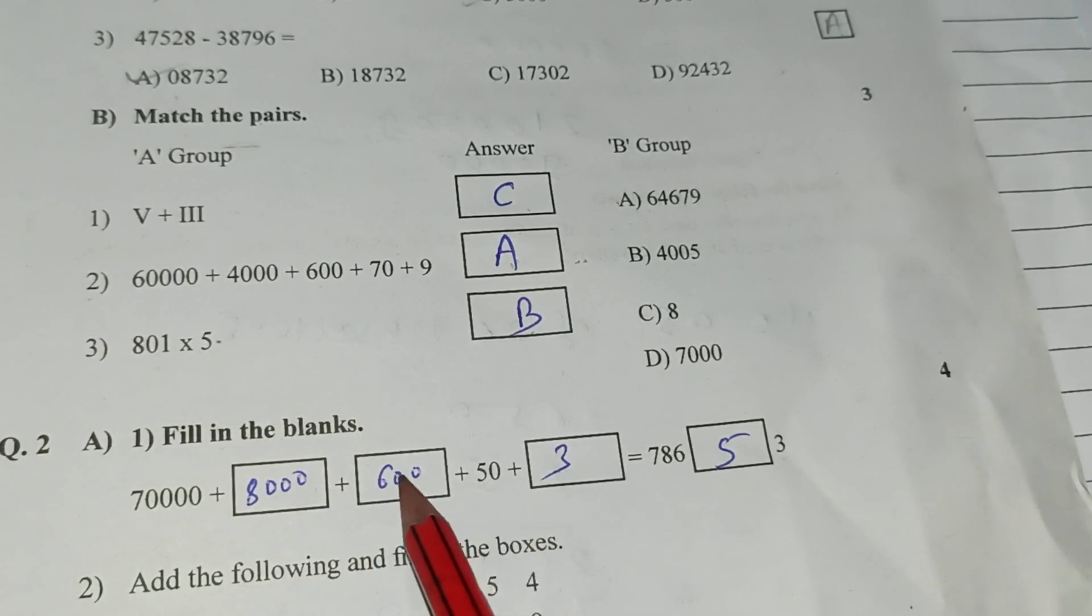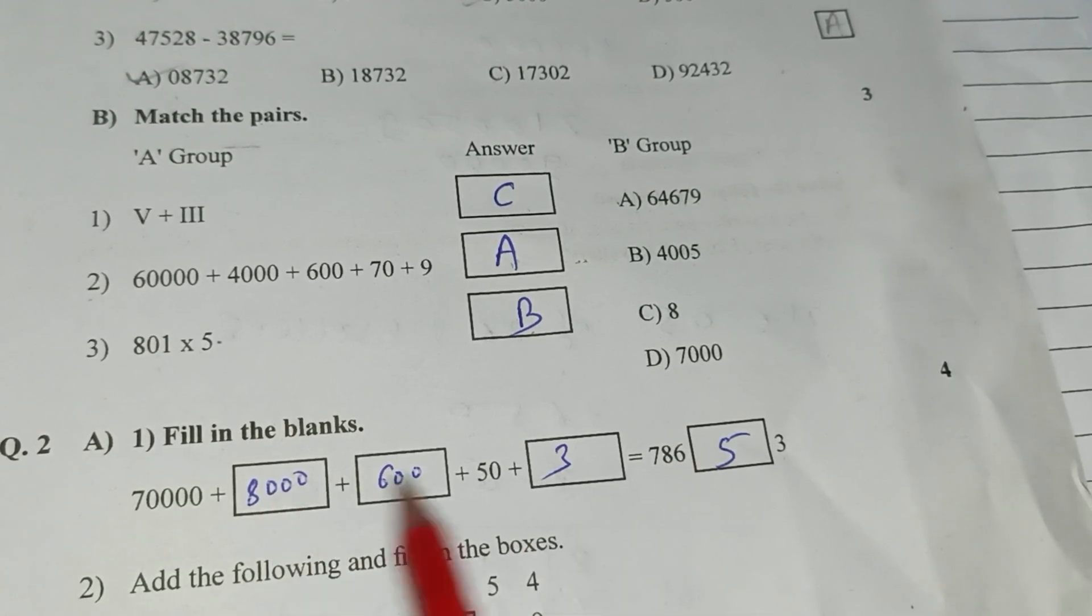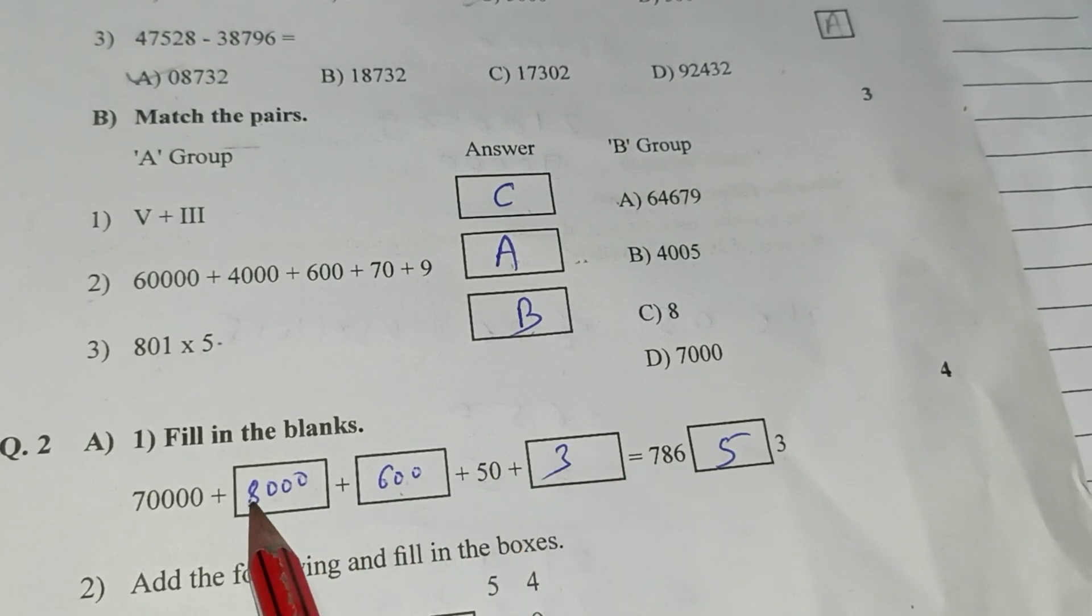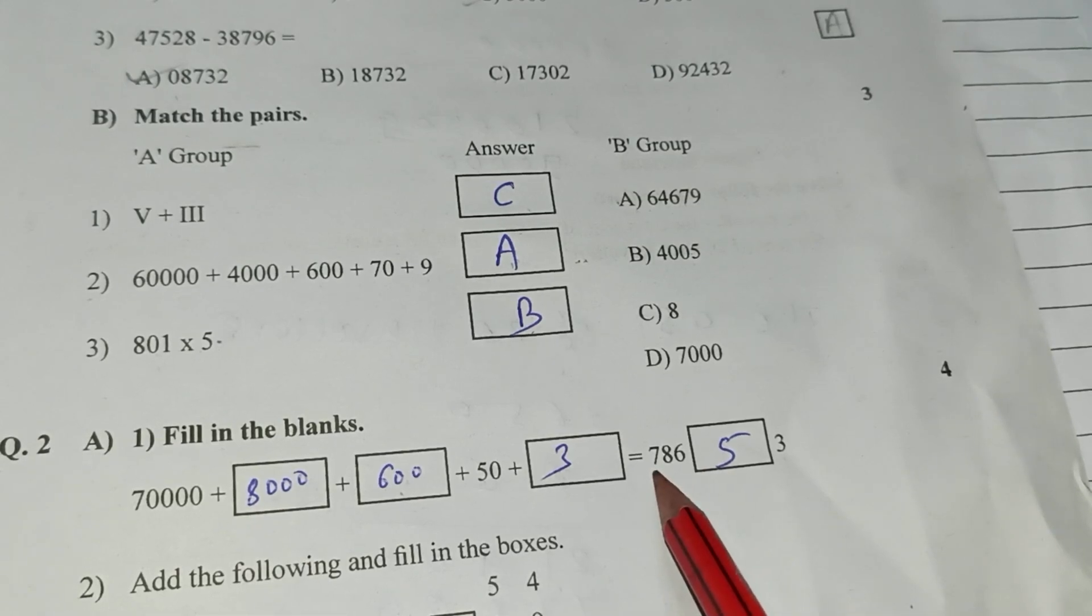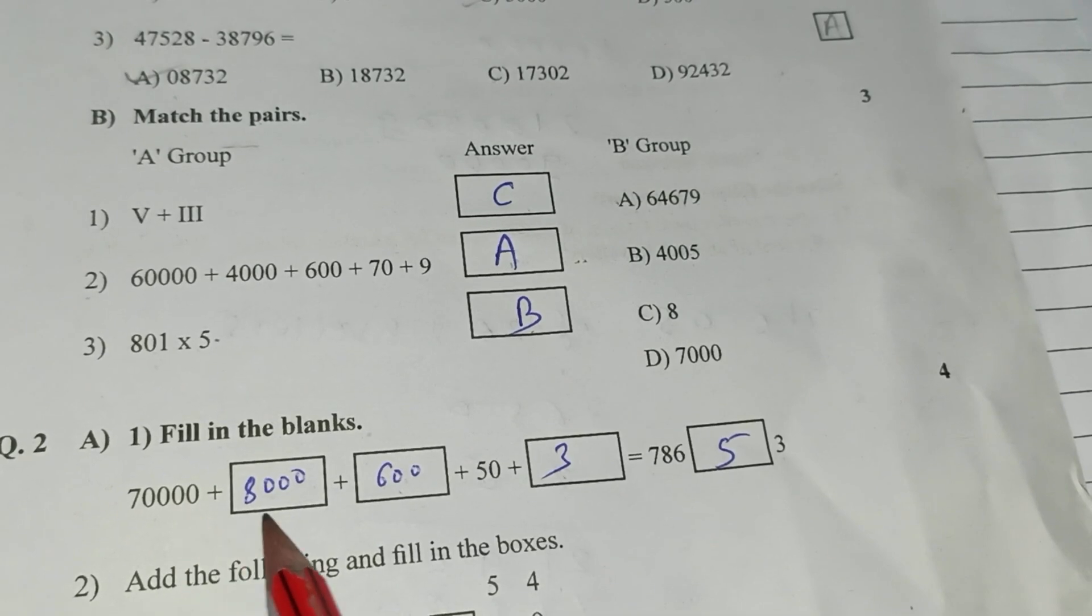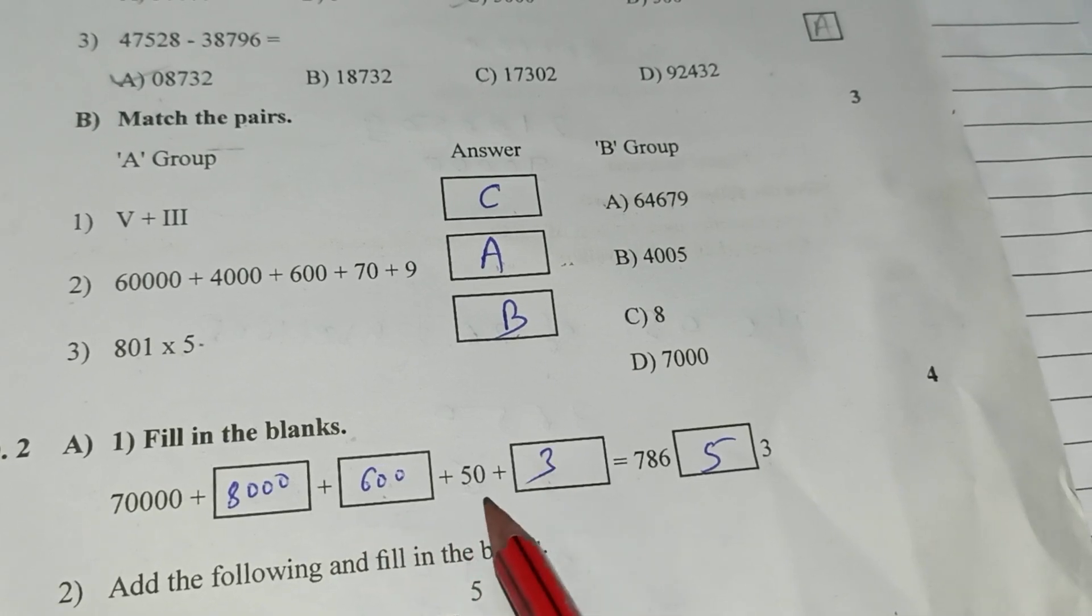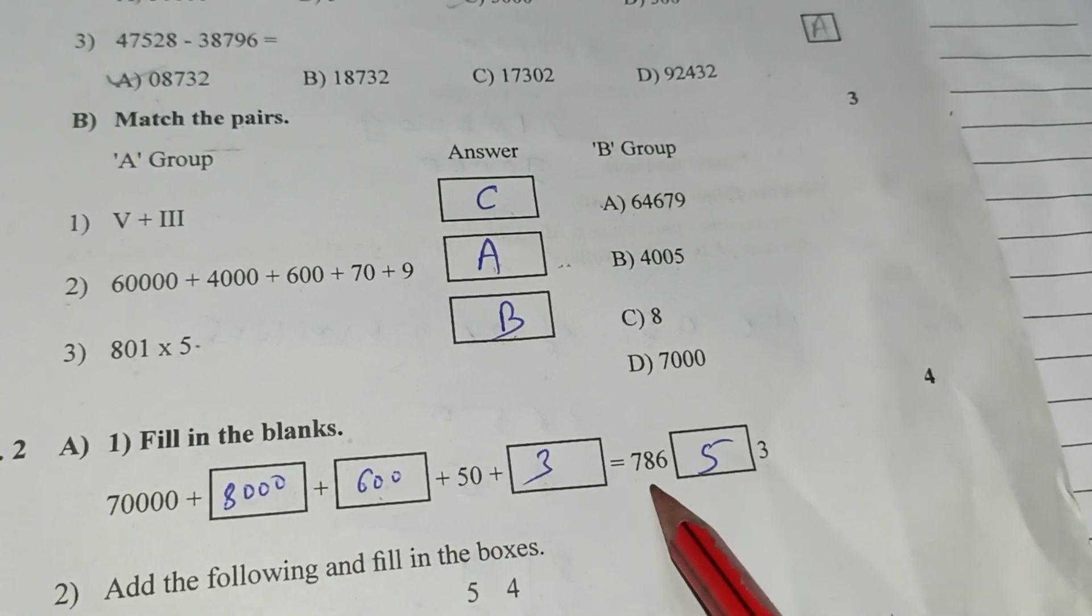Second 5, 0, 0, 5. Third here 6, 0, 6, then last 8, 8. 70,000 plus 8,000 plus 600 plus 50 plus 3 is equal to 78,653.